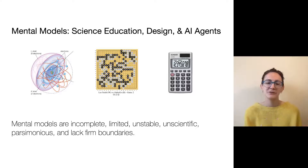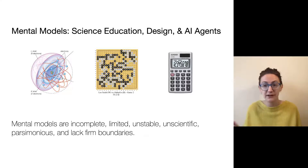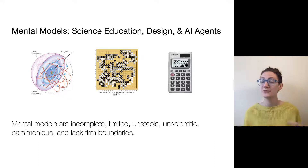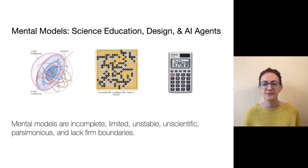We place the AI agent between science mental models and design mental models because there are some distinct differences. Conceptual models in science come from discovery and can change over time. In design, we're creating the artifacts we study, so a designer or engineer has a very solid understanding of how a calculator works because they built it. AI agents are somewhere in between — on one hand, yes, we build them ourselves, but there's also a bit of discovery involved in understanding how they actually behave.